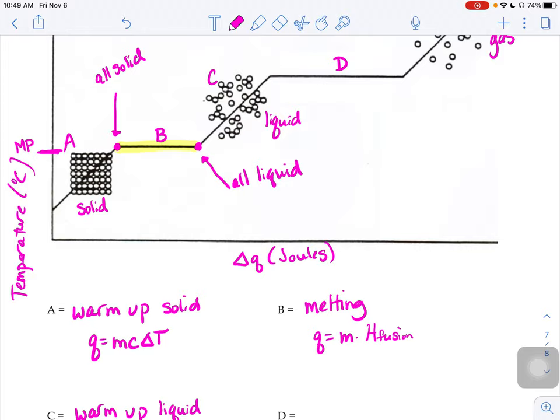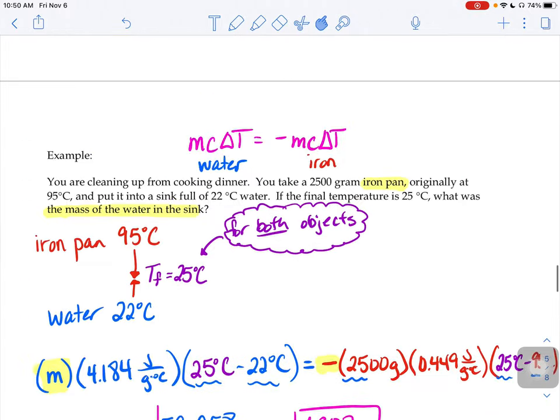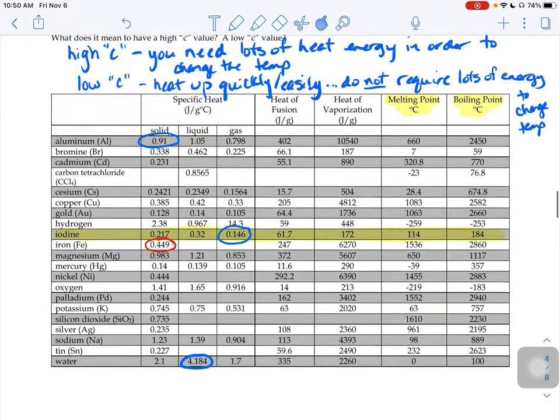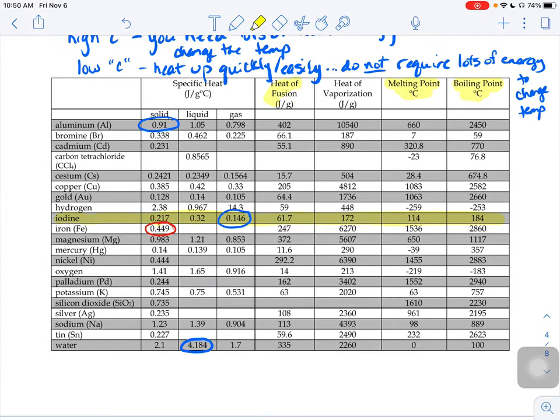Instead, we're going to do mass times heat of fusion. The heat of fusion number on this chart up here, this column right here, tells us how much energy it takes to get one gram of your substance to switch over from solid stage to liquid stage. Now, you'll notice that there is no delta degrees C in the unit there because the temperature isn't changing. There is no delta T, so there's nothing about Celsius in that heat of fusion.